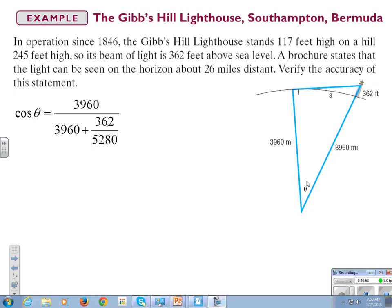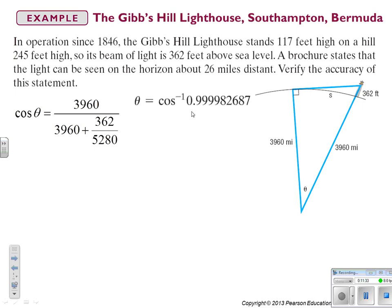All right. So if you look theta, since we have the hypotenuse and we have the adjacent side, we're going to use cosine. And the adjacent side is 3,960 miles, which is the radius of the earth. And the hypotenuse is 3,960 miles plus 362. But we are in feet, so we need to divide by 5280 so we can convert it to miles. So when we chug these numbers in our calculator, we get 0.999982687. And we're going to inverse cosine on our calculator for that. And we get 0.33715 degrees as our theta.